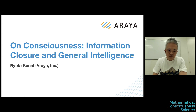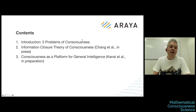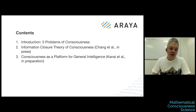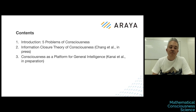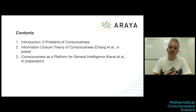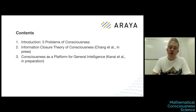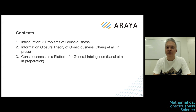There are three parts. I want to give a brief intro to problems of consciousness in the first five minutes or so, and then there will be two main parts. The first is called Information Closure Theory of Consciousness — an information-theoretic approach proposed by Asa Chan, who works in my company Araya and used to work with me and Anil Seth at Sussex. For the last part, I want to connect consciousness to general intelligence, though this part will be a lot of speculation.